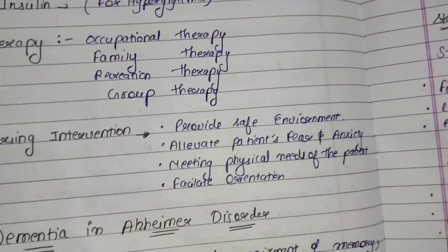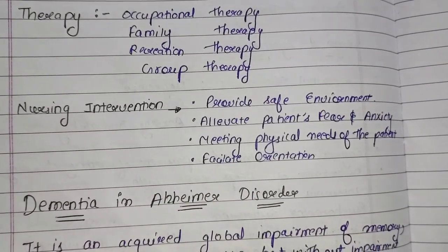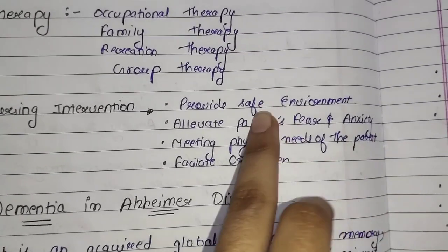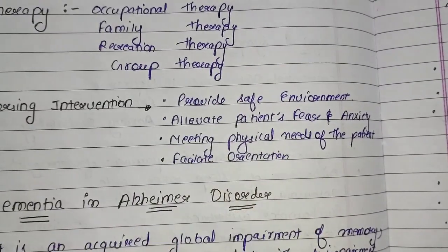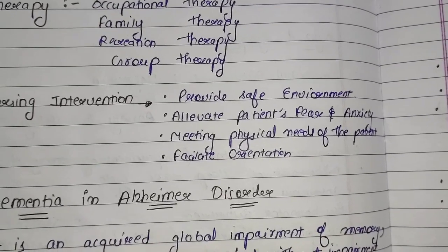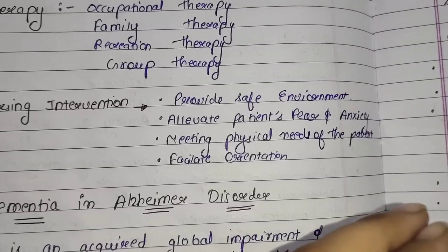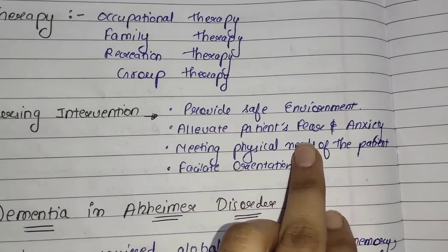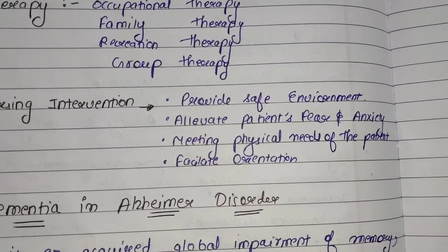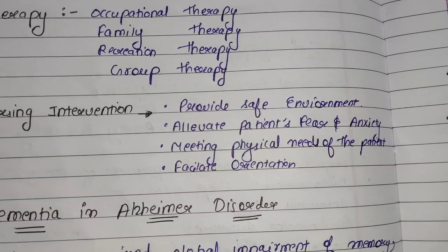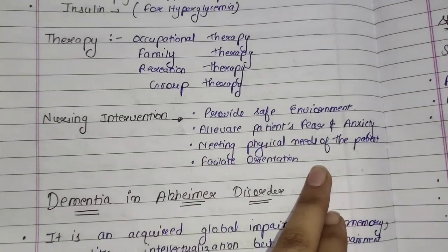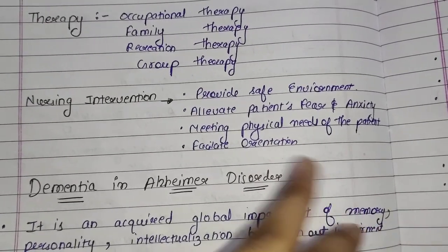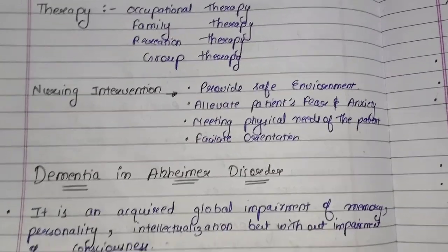Next we will study about nursing interventions used to treat delirium. First, a safe environment should be provided to the patient so they feel safe and comfortable. Second, the patient's fear and anxiety should be alleviated so the patient can feel relief. Third, the physical needs of the patient should be fulfilled, and orientation facilities should be provided by the nurse.